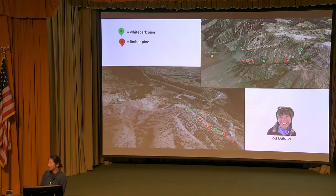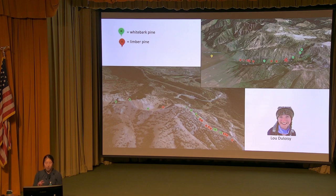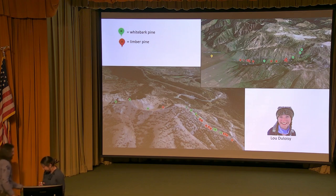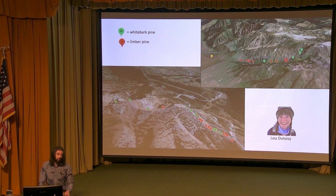Question: How many trees were used in the greenhouse study? We obtained whitebark, limber, and also Great Basin bristlecone pine seedlings - five-year-olds, and also two-year-olds and three-year-olds of whitebark pine. For all of those it was somewhere upwards of 500 to 600 seedlings to start. Thank you all for joining us. Join us in June for our next lunchtime expedition presentation with David Haynes, who will be discussing golden eagle nesting ecology in Yellowstone National Park.